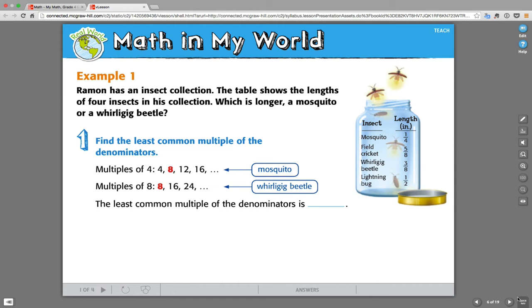Going on to the next question. It says, Ramon has an insect collection. A table shows the lengths of four insects in his collection. Which is longer, a mosquito or a whirlybug? So, we have to look at these different fractions. We really don't need all of them. We need the mosquito and the whirlybug for this question. A whirlygig beetle, sorry. A mosquito is one-fourth of an inch long and a whirlygig beetle is three-eighths.